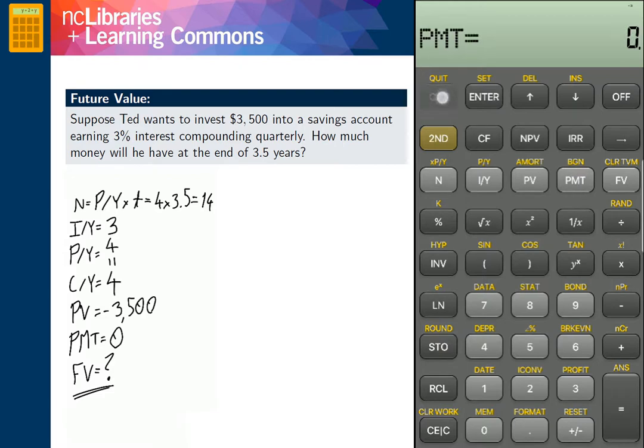Now we are ready to hit the Compute button, CPT, the FV button, which gives us our answer of 3,885.964347. Or after rounding, 3,885.96.